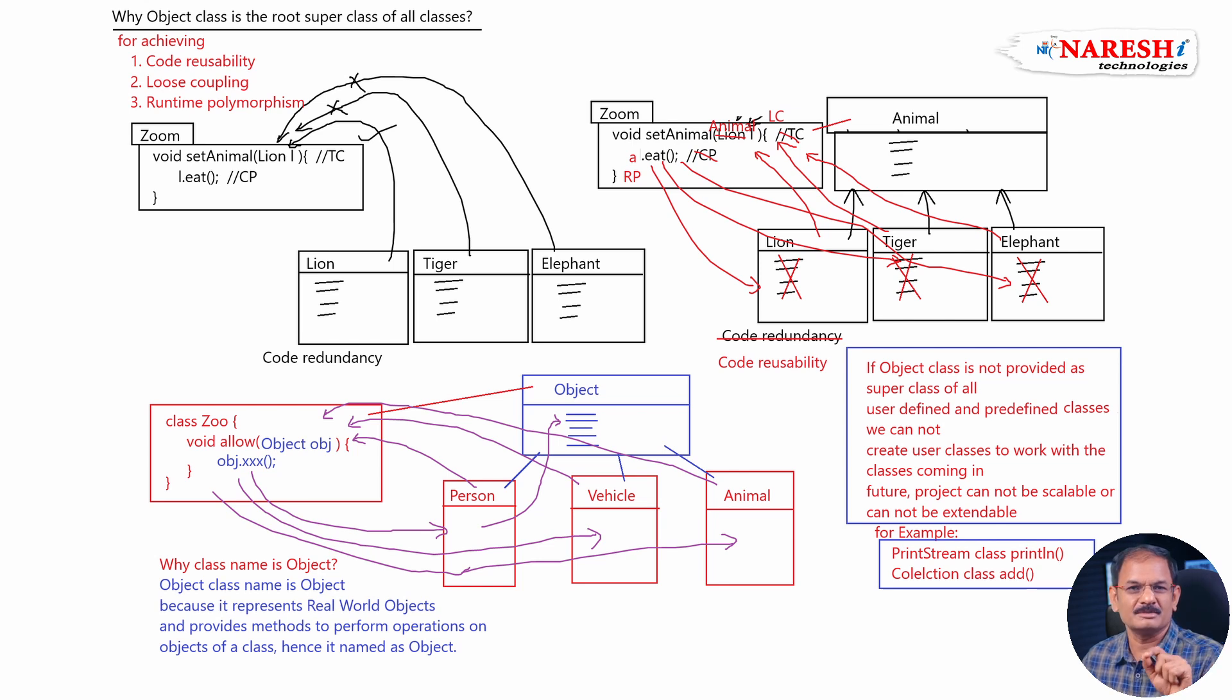Why java.lang.object class name is object? Because it represents real world objects and also represents the operations to be performed by the instance of the class. That is why it is named as object.